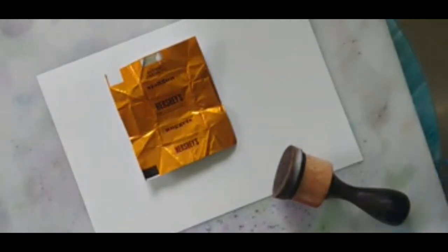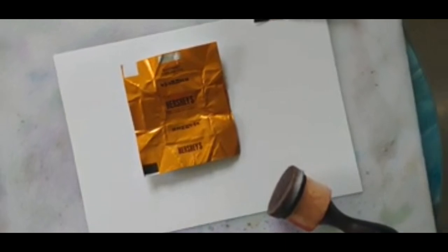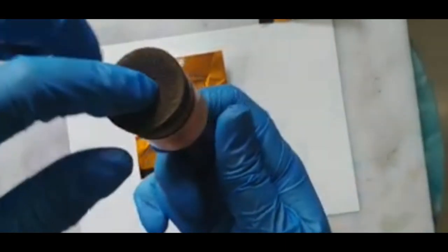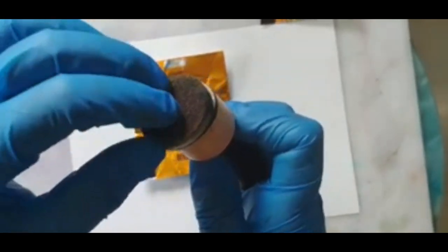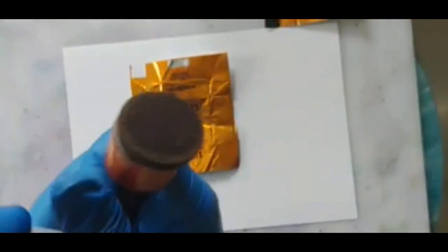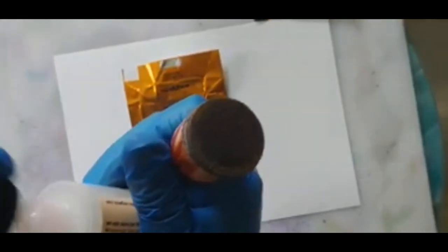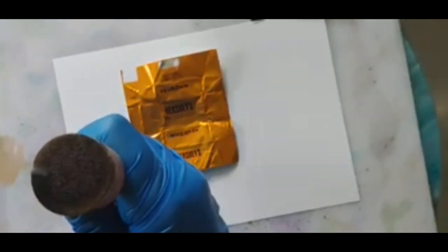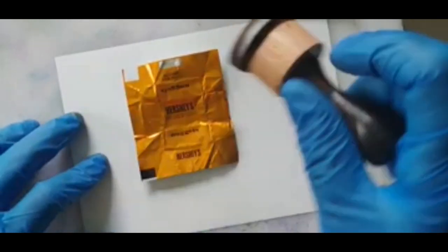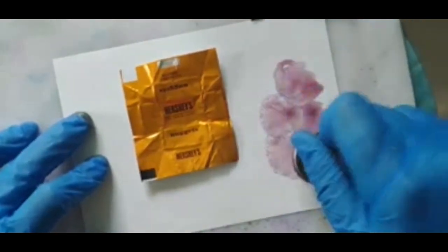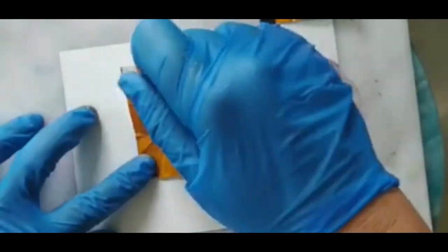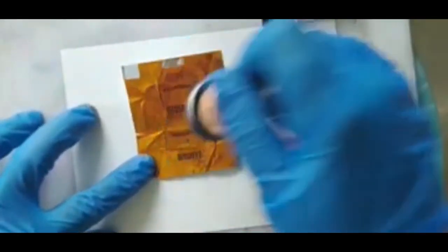We'll just get started. Since this is already loaded with some ink, I'm actually just going to put some of the blending solution on that, just to get the sponge softened up a little bit. Let's take off some of that ink.